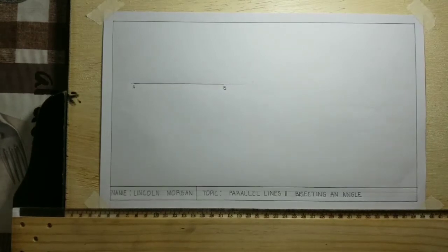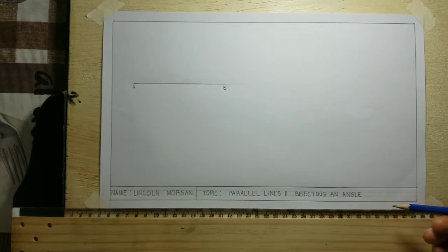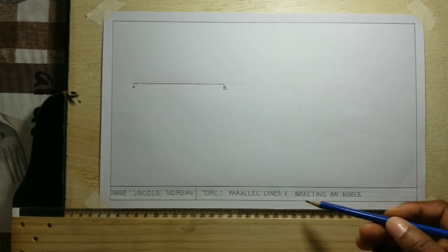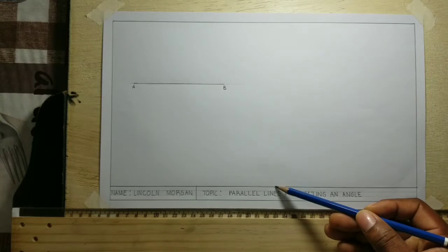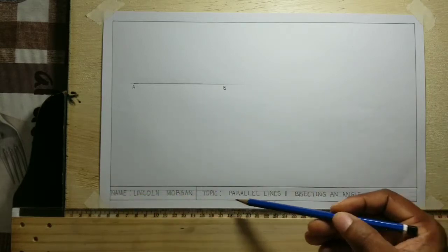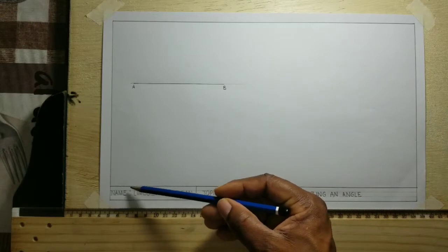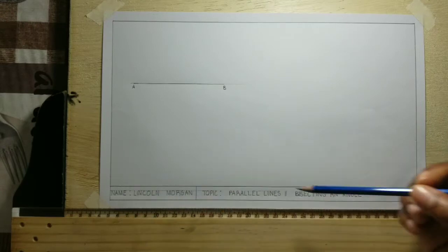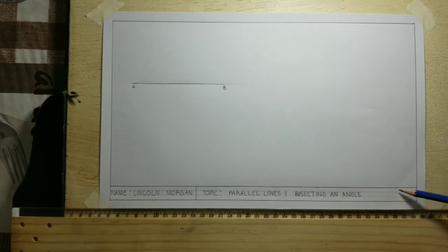Now parallel lines are lines that are running in the same direction and are the same distance apart. For example, these two lines — they are in the same direction and they are equally apart. If I should measure from here to here I will get my 15 millimeters, and if I should measure from here to here I will still get my 15 millimeters. So the distance between both of them is equal.